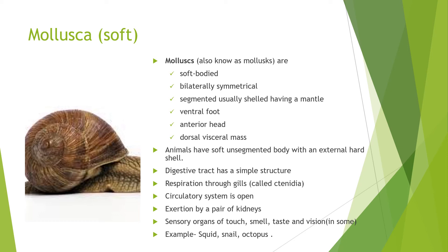Mollusca have a soft body that is bilaterally symmetrical and usually covered by an external hard shell. The image shows a snail, which has a top shell and a ventral foot. They have an anterior head and a dorsal visceral mass. The digestive tract is simple. Respiration occurs through gills called ctenidia. The circulatory system is open and excretion is done through a pair of kidneys. They have sensory organs for touch, smell, taste, and vision. Examples are squid, snail, and octopus.